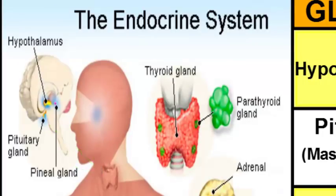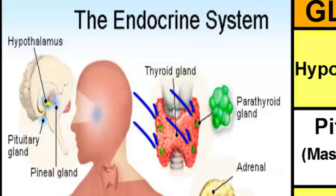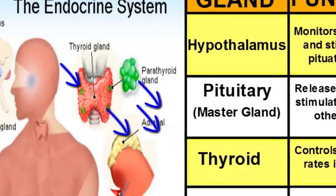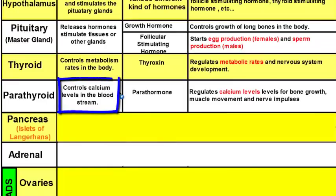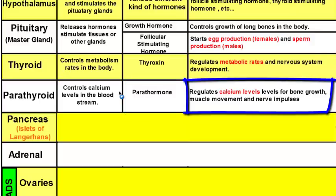The thyroid gland is located on your trachea — on the windpipe. On the thyroid gland you'll see four clusters of green cells, which are another gland called the parathyroid. The parathyroids are important because they control the calcium levels in your blood by producing a hormone called parathormone. Calcium is important for bone growth, muscle contractions, and nerve impulses. The parathyroid regulates calcium levels in your blood, either for release or for storage.